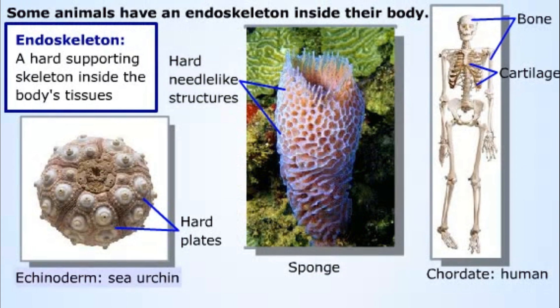Echinoderms, like sea urchins, have an endoskeleton composed of hard plates held together by proteins. The most familiar endoskeletons are those of the chordates, composed of bone and cartilage.